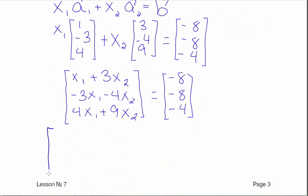So this is now just a system of equations, and I can rewrite this. It's [1, 3, -8; -3, -4, -8; 4, 9, -4].